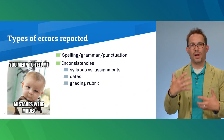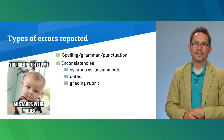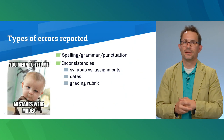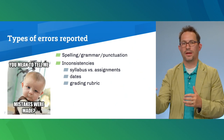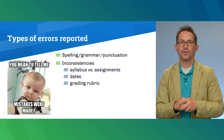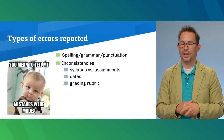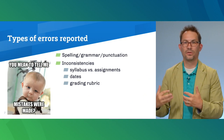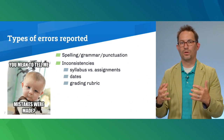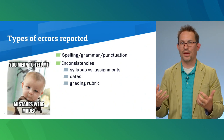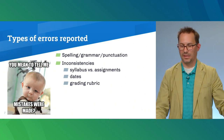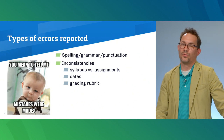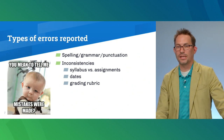As a course evolves, sometimes the points for an assignment change. What was once 150 points might now be 100 points. The assignment might say it's worth 100 points, but then the grading rubric lays out 150 points, which can be confusing for students — and sometimes I don't recognize that. I miss those things.